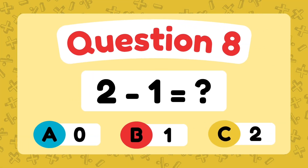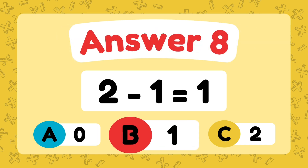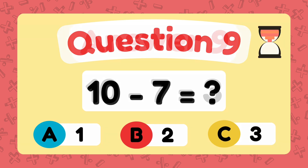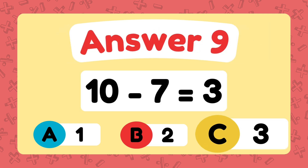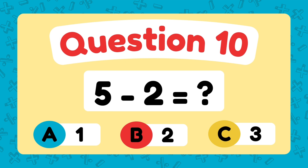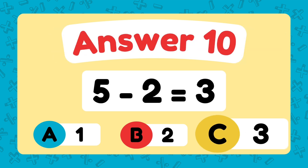What is 2 minus 1? What is 10 minus 7? The answer is 3.